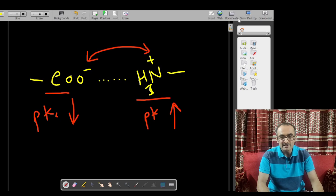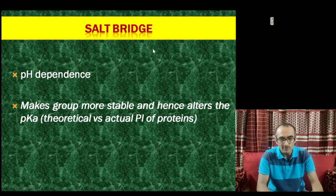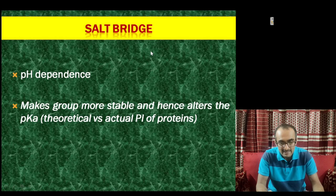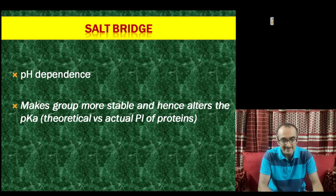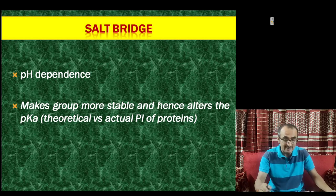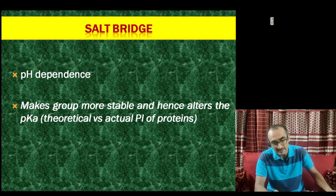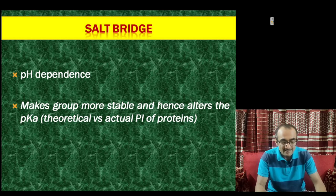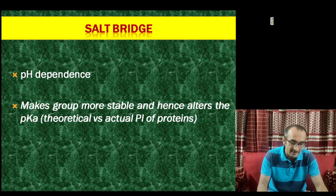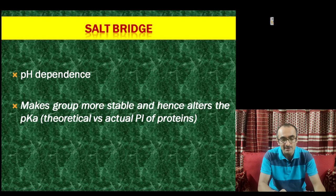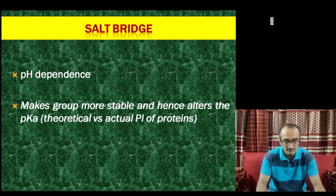So when ionic or salt bridge interactions exist together, the groups stabilize each other. As a result, their acidic and basic behavior changes, and hence the pI value of the protein also changes. This topic has been discussed in great detail in another video, where we talked about how to calculate the theoretical and actual experimental pI of proteins.